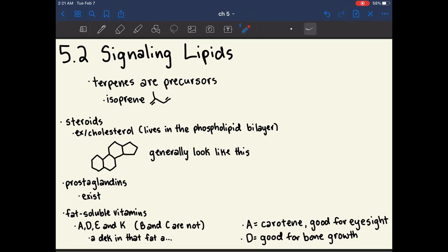Chapter 5.2 is about signaling lipids. So terpenes are precursors to a lot of signaling lipids. They're generally made out of isoprene, which looks like this.